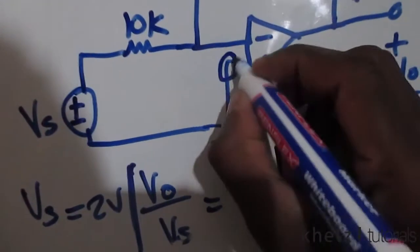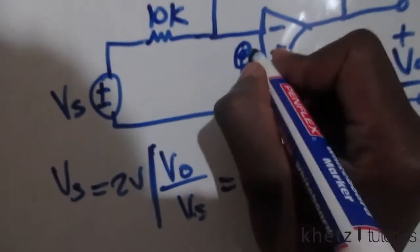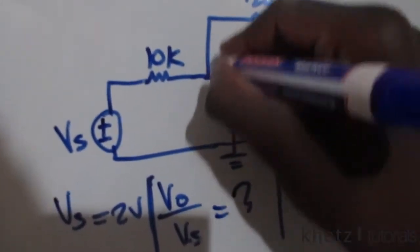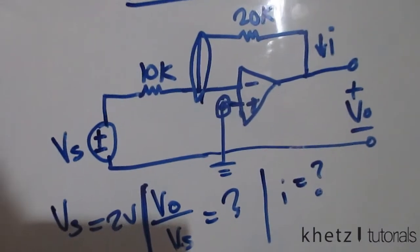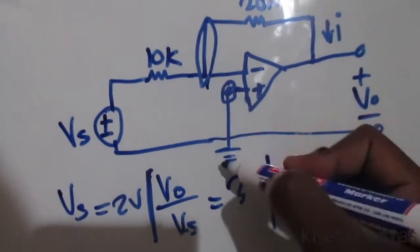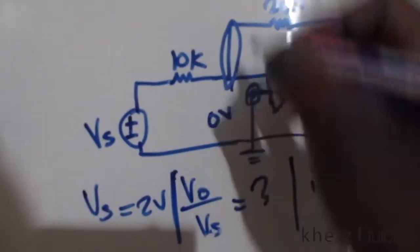So the terminal voltages are the same. Now that you only have a wire from this point to ground, we know that the voltage here is zero volts, which means the voltage here as well is zero volts. Now I can do nodal analysis at this point to actually link Vs and Vo.